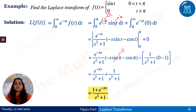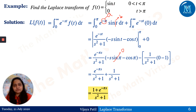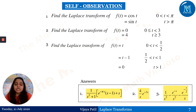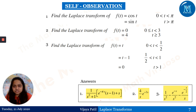Therefore the Laplace transform of this function is (1 + e^(−πs))/(s² + 1). So the Laplace transform of f(t) = sin(t) on [0, π] and 0 for t > π equals (1 + e^(−πs))/(s² + 1).